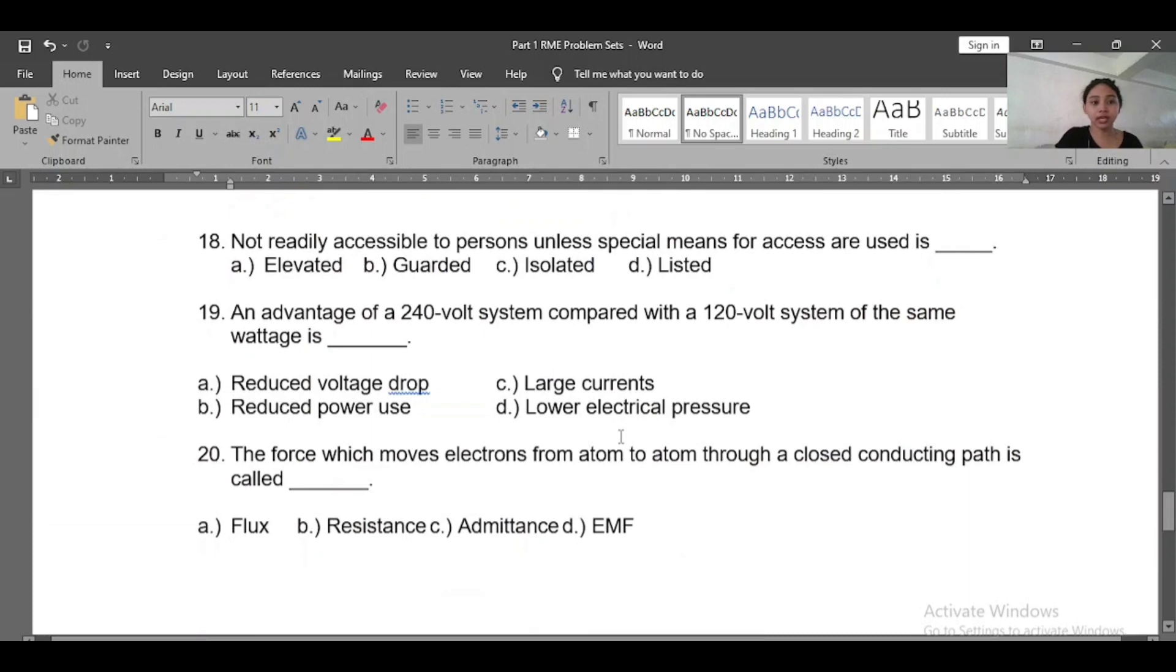Number eighteen: Not readily accessible to a person unless special means of access are used is blank. A) Elevated, B) Guarded, C) Isolated, D) Listed. So what's the answer? The answer will be C, isolated. So not readily accessible to the person unless special access - isolated.